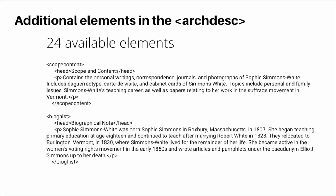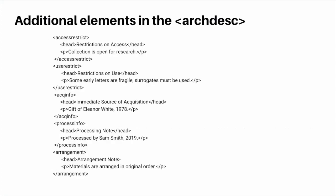Aside from the DID and the description of subordinate components, there are 24 additional elements that allow us to describe various aspects of the material. Elements such as Scope Content and BiogHist are available for a content summary of the materials being described and a biographical or historical note about the records creator. Elements such as Access Restrict and Use Restrict are available for administrative information about access to and use of the materials. Elements such as Process Info and Arrangement are available for providing information about an archivist's interaction with the materials, and so on.